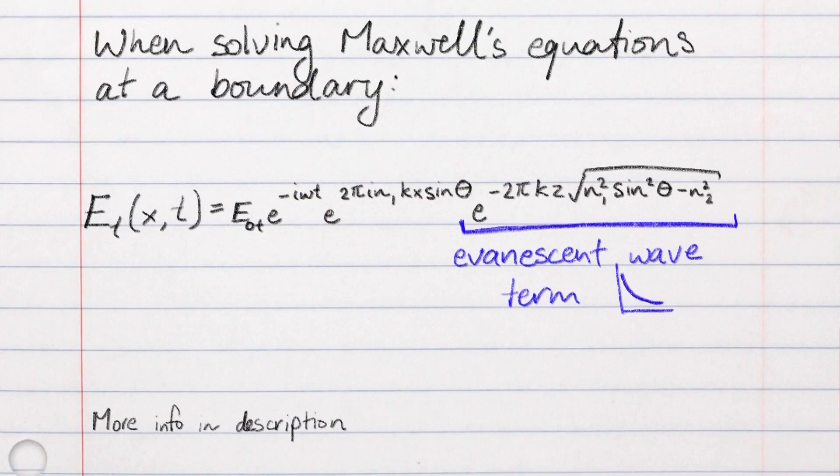Mild digression: optics was one of my favourite subjects in university and we did a lot of work on evanescent waves, but I never really got a physical intuition for why they're there. The only answer I ever found is because Maxwell's equations say so — like when you solve the equations you end up with this decaying exponential. But other than that, I can't really see a physical reason for why a wave can't just abruptly stop at a boundary and change direction. So if you do, please explain it to me in the comments. Okay, digression over.